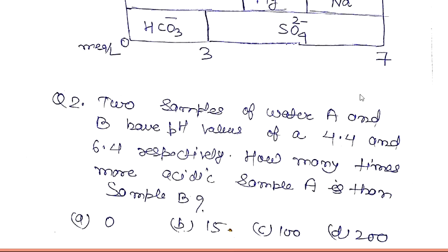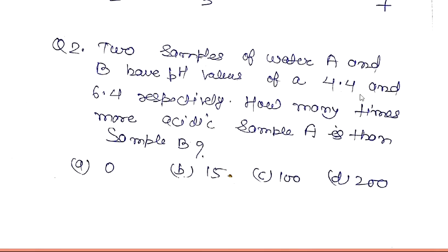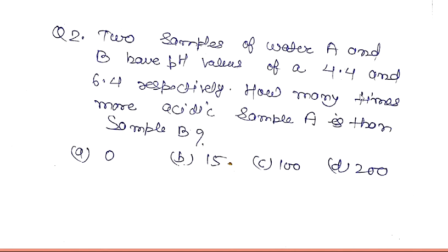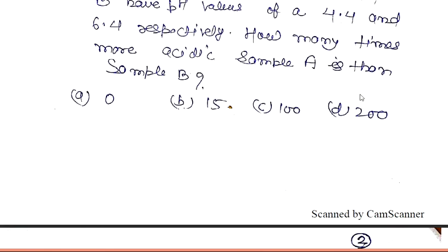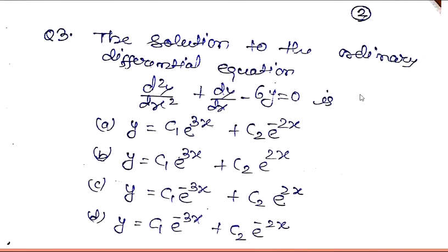Question number two: two samples of water A and B have pH values of 4.4 and 6.4 respectively. How many times more acidic is sample A than sample B? The options are given.